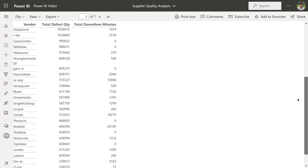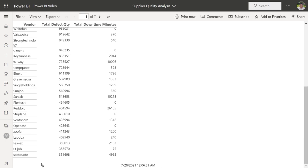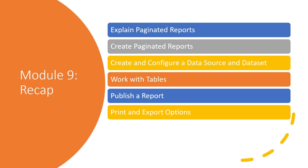I'll drag the scroll bar to the bottom and see the page number there, along with the date and time for the execution date and time that was already in the footer. In this module, you learned what paginated reports are and that they're meant to be consumed in the service or by exporting to PDF, printing, and distributing. You created a multi-page paginated report in Power BI Report Builder by creating and configuring a data source and data set. We used the Table Wizard to create the report, published it, and reviewed print and export options. You also learned that paginated reports can only be published to a premium workspace.